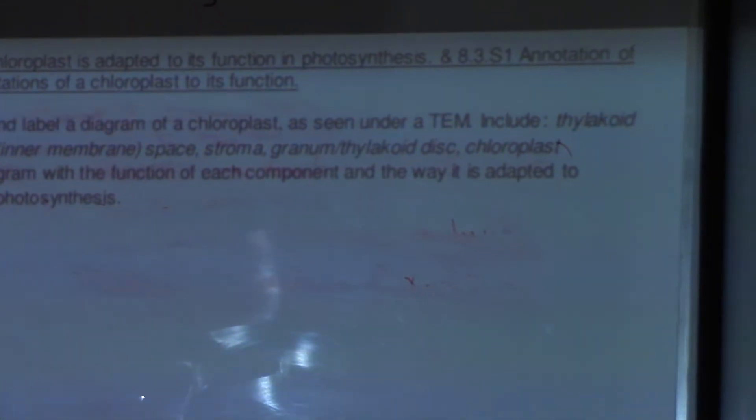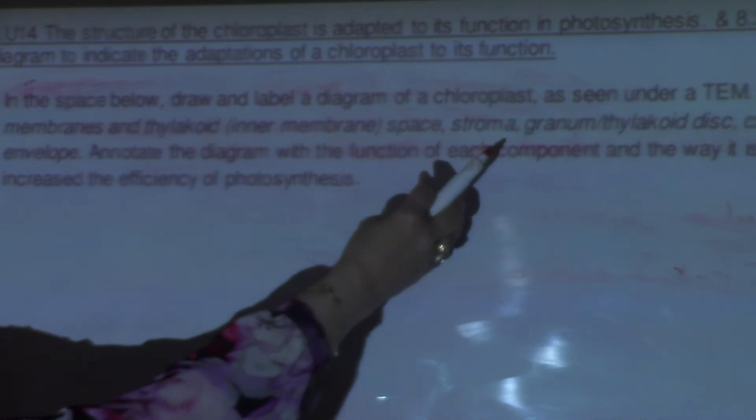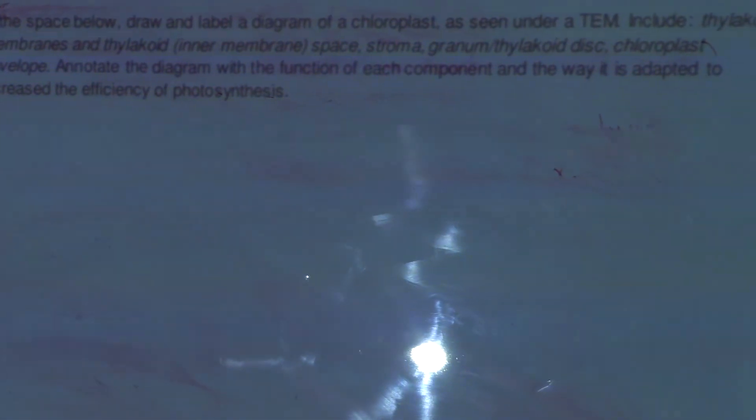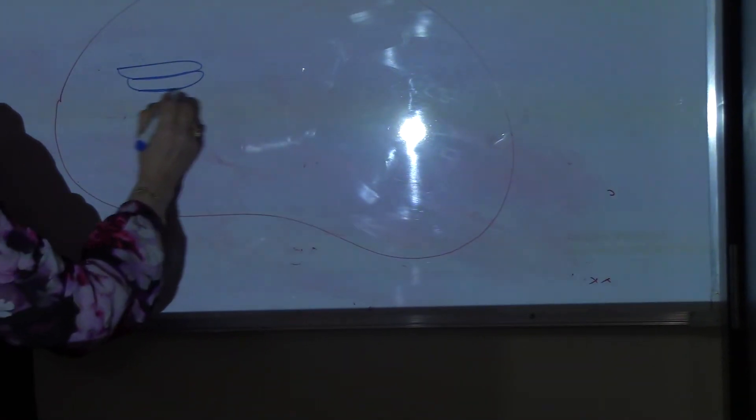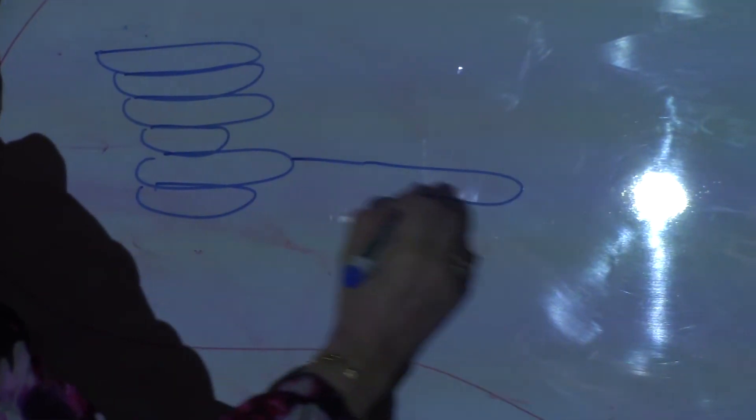Draw and label a diagram of the chloroplast as seen under TEM (transmission electron microscope), showing thylakoid membranes, inner membrane space, stroma, granum, chloroplast envelope, and annotate the function of each component and how it is adapted to increase the efficiency of photosynthesis. Draw the outer envelope first, then the thylakoid membranes, which form a granum. Each granum is connected to another by a granum lamella.